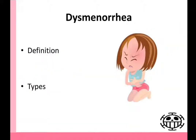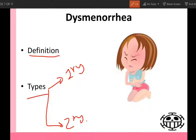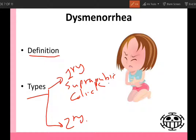Dysmenorrhea means painful menstruation, and this pain is severe enough to incapacitate the patient and interfere with her physical and social activity. Types of dysmenorrhea: there is primary dysmenorrhea, which is called spasmodic, and secondary dysmenorrhea, which is called congestive. In primary dysmenorrhea, there is no pelvic lesion, and the cause of this pain is an increased amount of prostaglandin and uterine ischemia. This pain is suprapubic and colic pain, and it starts several hours before menstruation and is relieved within one to three days.